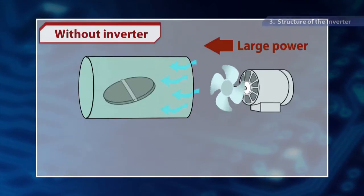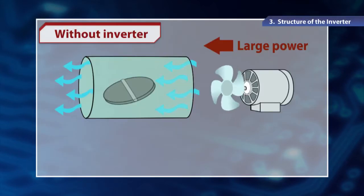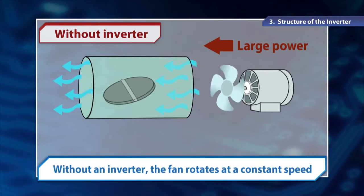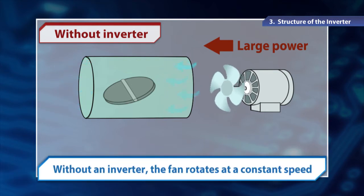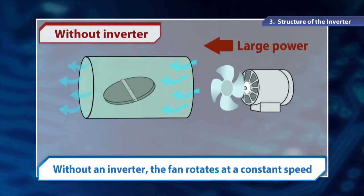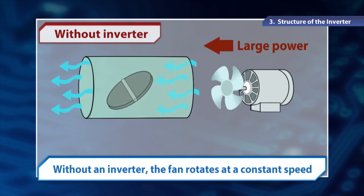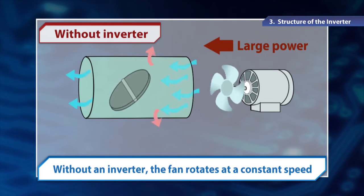When a fan runs without an inverter, but by a commercial power supply at a constant voltage and frequency, the fan rotates at a constant speed. To reduce the airflow, dampers are used, but since the motor continues to use power, it is wasted.